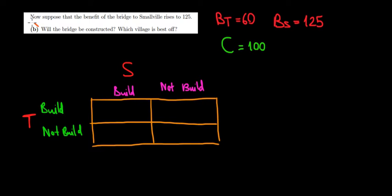Let's have a look at part B now. Suppose that the benefit of the bridge to Smallville is going to be 125 now. So the data changes a bit. We have the benefit to Smallville of 125. The benefit to Tiny Town is still 60 and the cost of the bridge is 100. Now let's see what's going to be the decision in this case because they still decide independently.